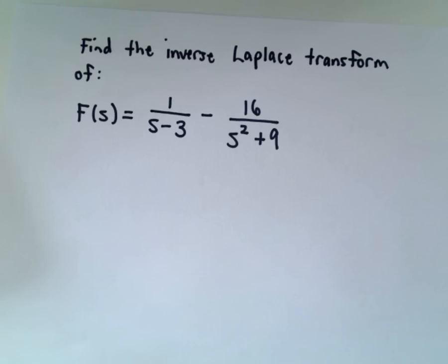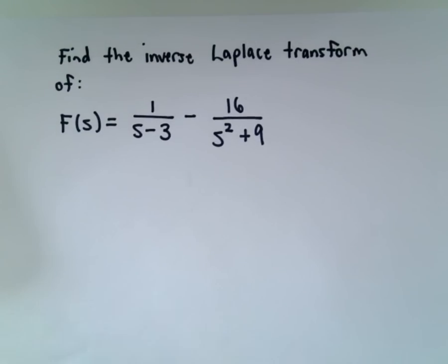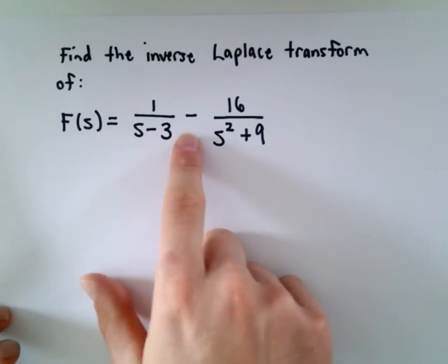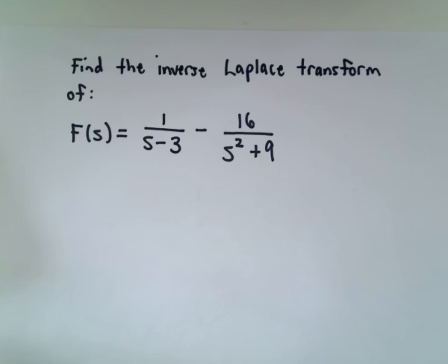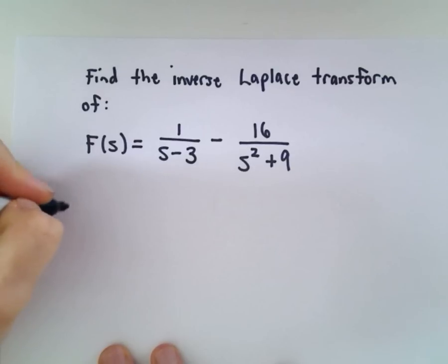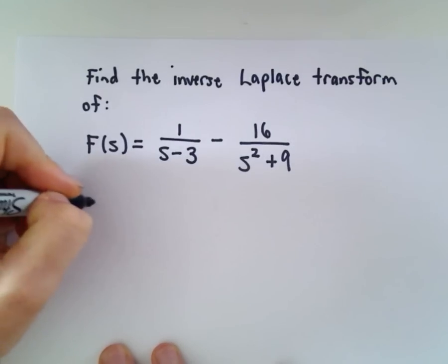Let's do a very simple example finding the inverse Laplace transform of this function F(s) equals 1 over s minus 3 minus 16 over s squared plus 9. We're just going to take the inverse Laplace transform of both sides.